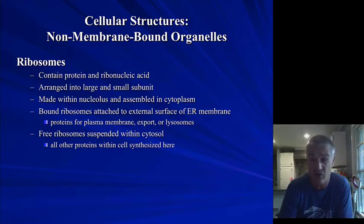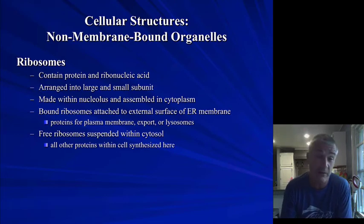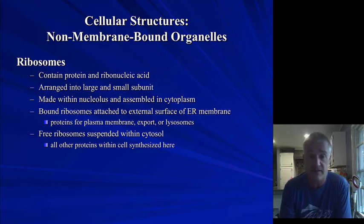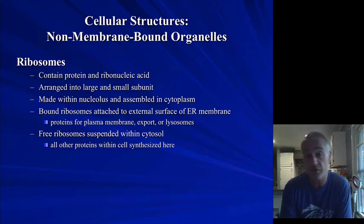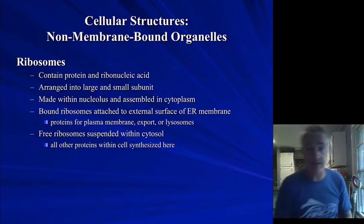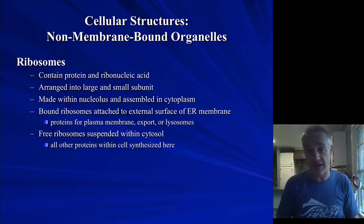Ribosomes can be found attached to other membranous organelles such as the endoplasmic reticulum — at that point we call it the rough endoplasmic reticulum. We also see ribosomes floating free within the cytoplasm. In both cases, what they're doing is protein synthesis — taking messenger RNA from the nucleus and converting that to proteins through the process of translation.